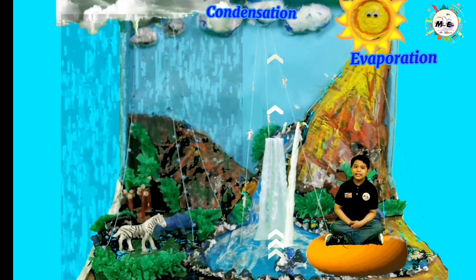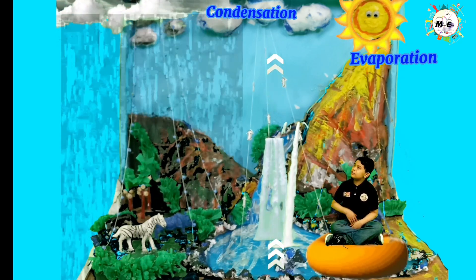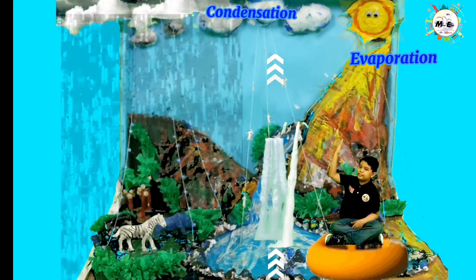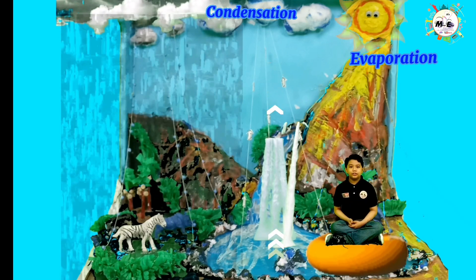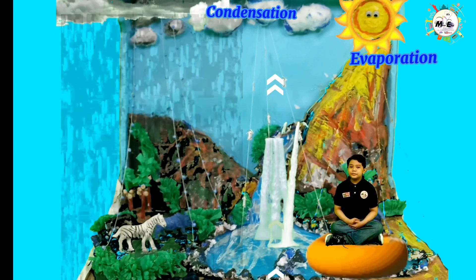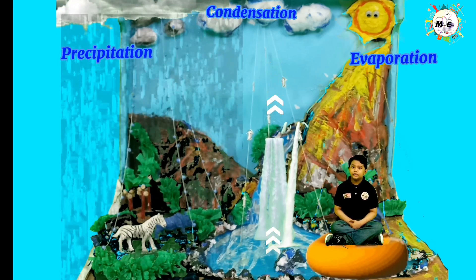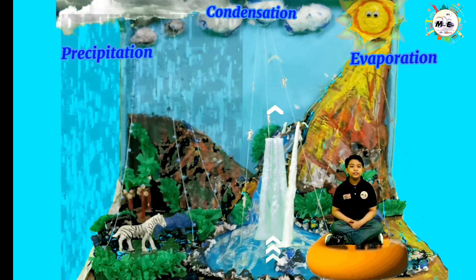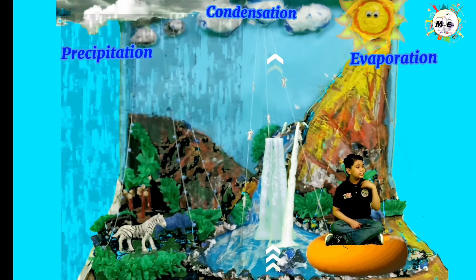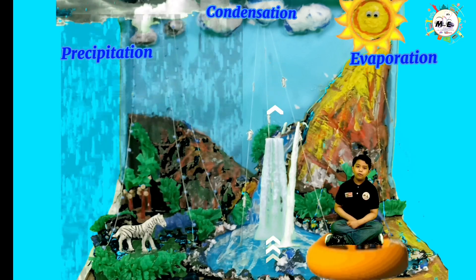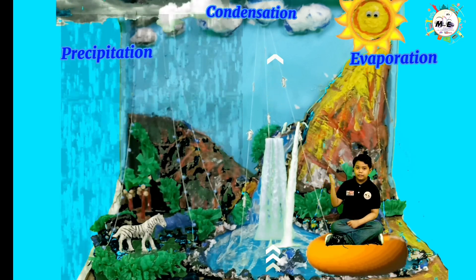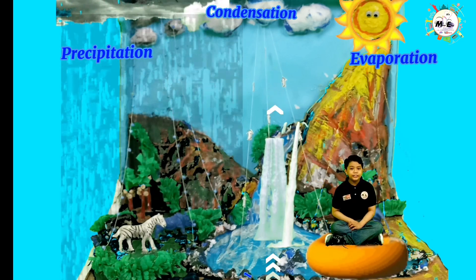When too much water accumulates, clouds get heavy and water falls as rain. This is precipitation. Did you know that in some countries, water falls as sleet, snow, or hail?